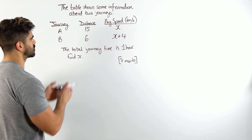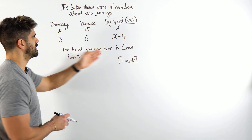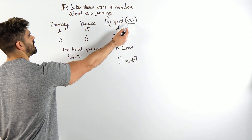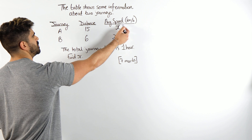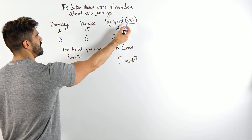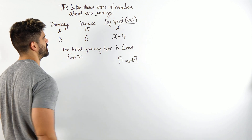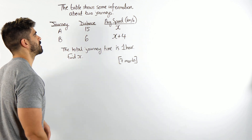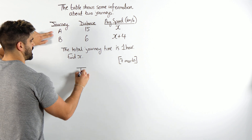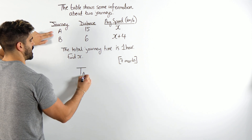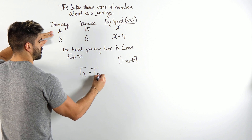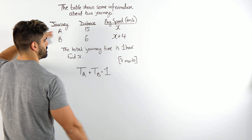The total journey time between A and B is one hour. Now we have to check that the units match up, so the distance must be in kilometres because the average speed is in kilometres per hour. So the time taken to travel for A and the time taken to travel for B must equal one.